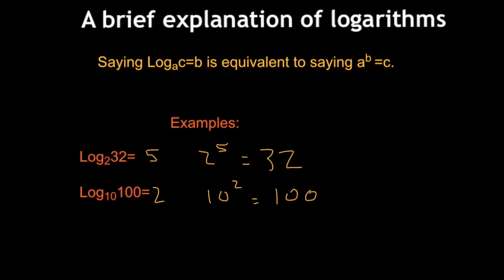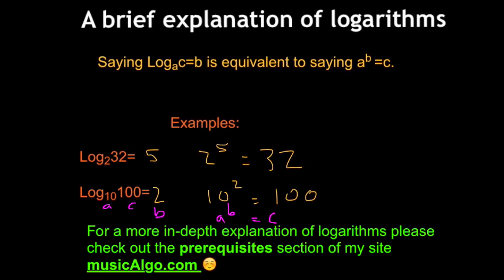So here A equals 10, C equals 100, and B equals 2. So we can see that A raised to the B equals C. Now for a more in-depth explanation of logarithms, please check out the prerequisites section of my site, musicalgo.com. And now we're going to move along in the analysis.